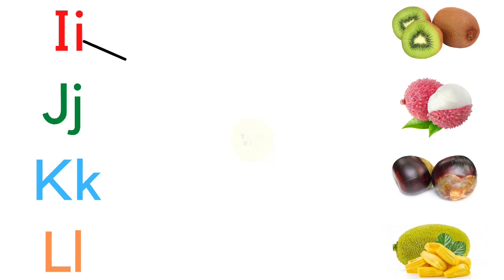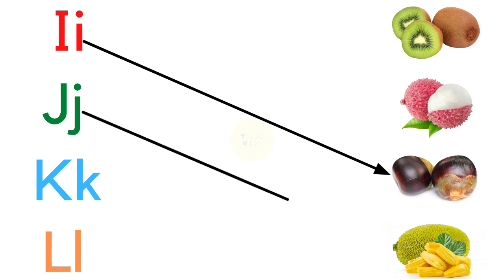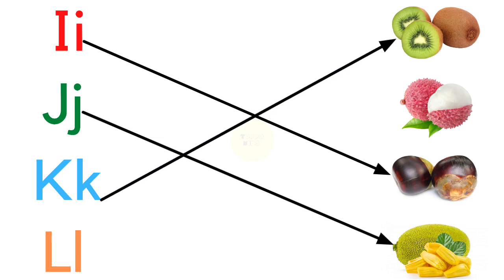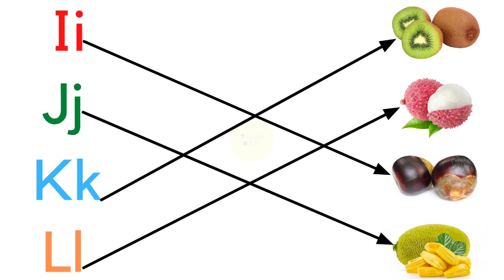I for ice apple, J for jackfruit, K for kiwi, L for lychee.